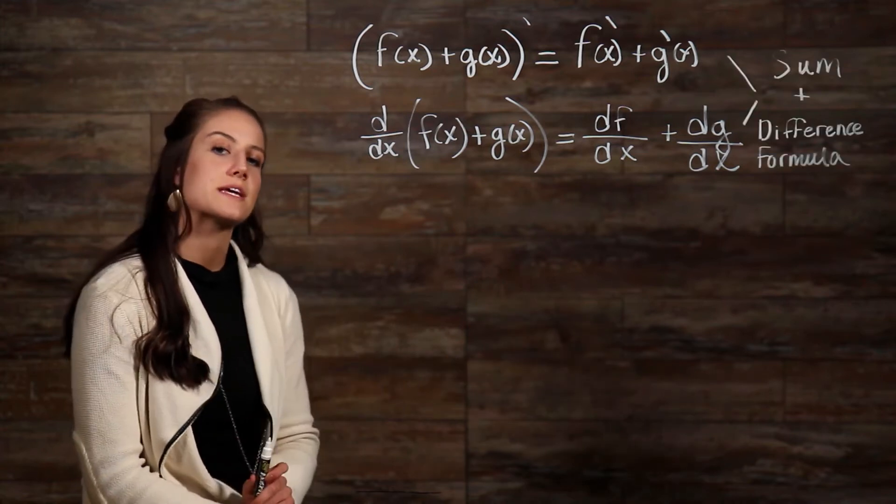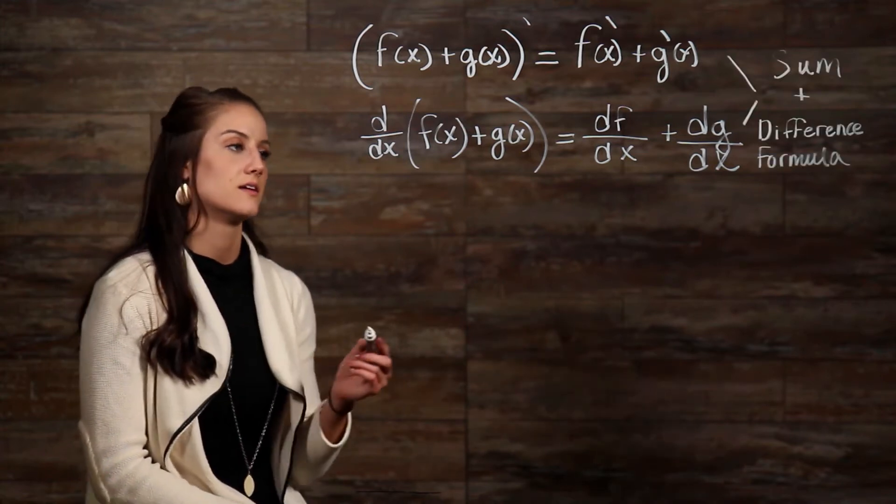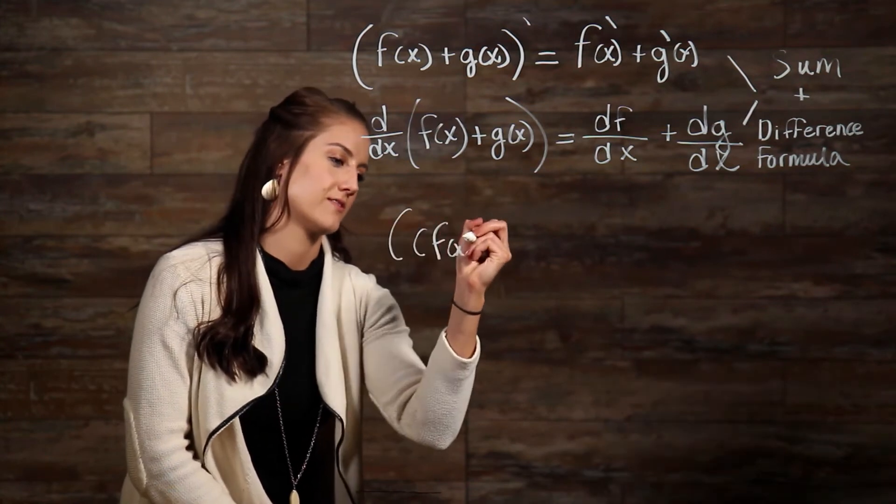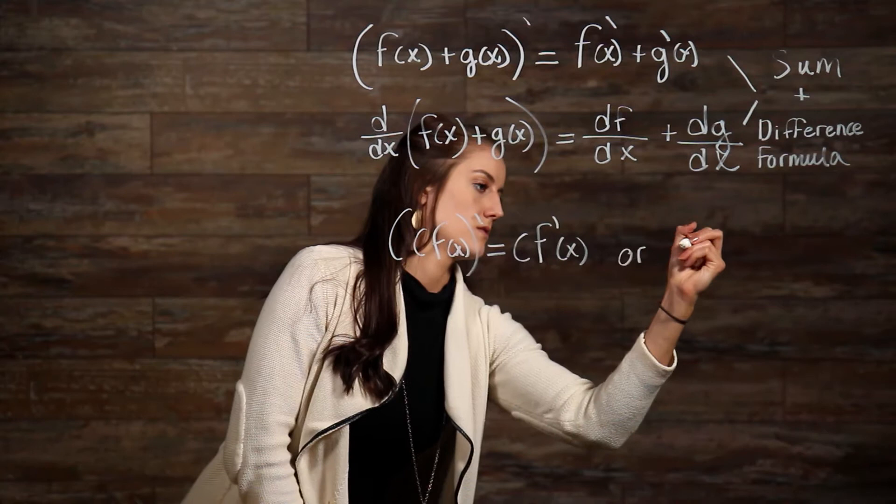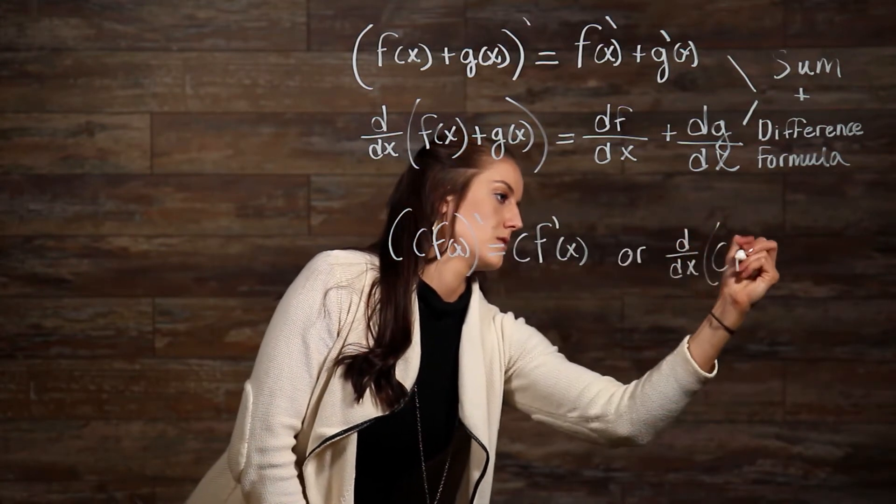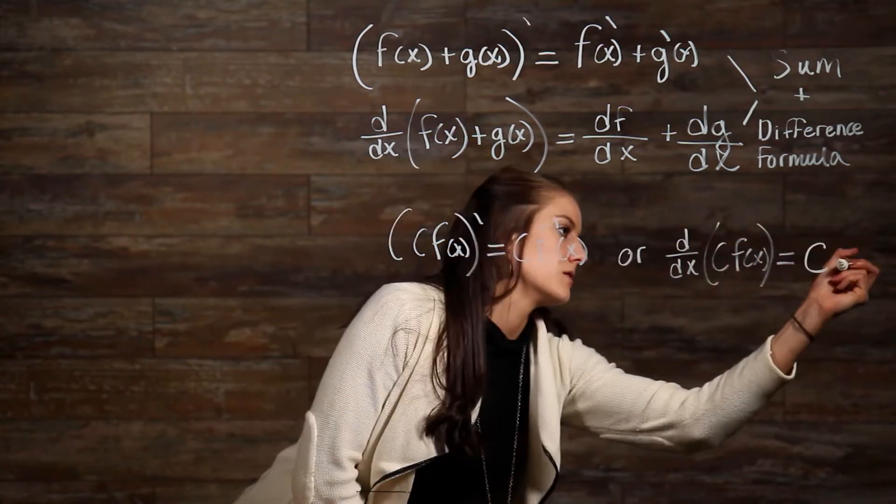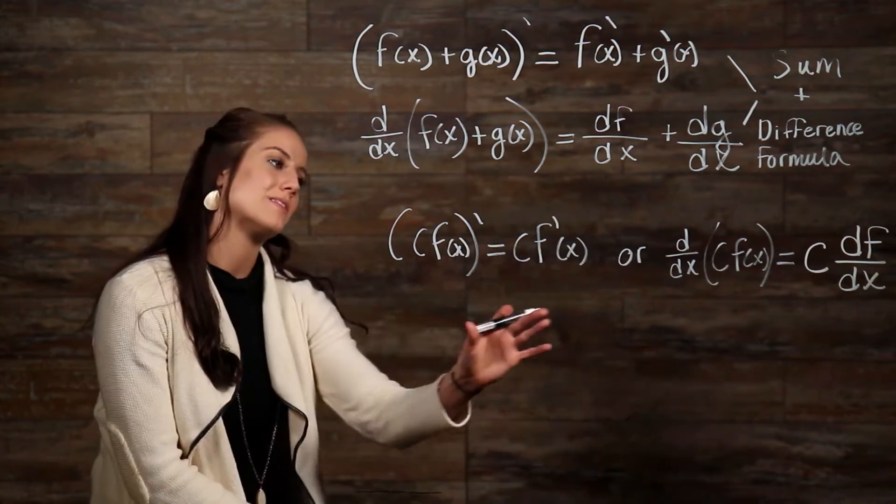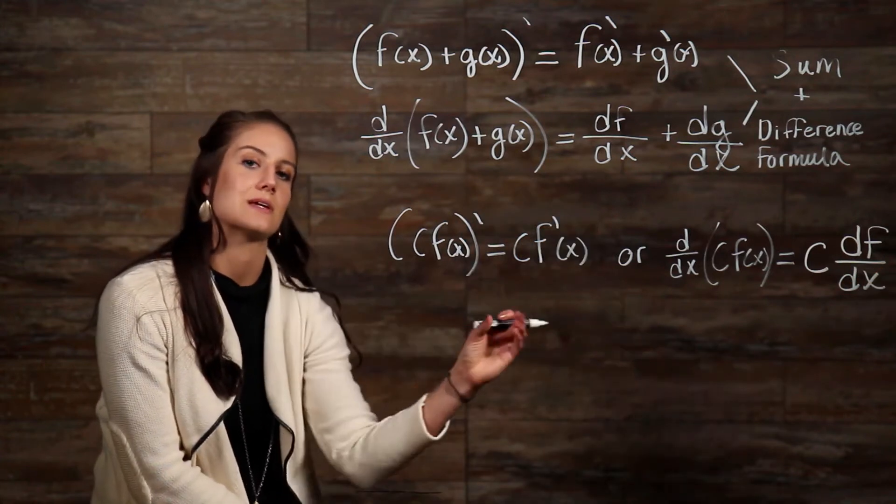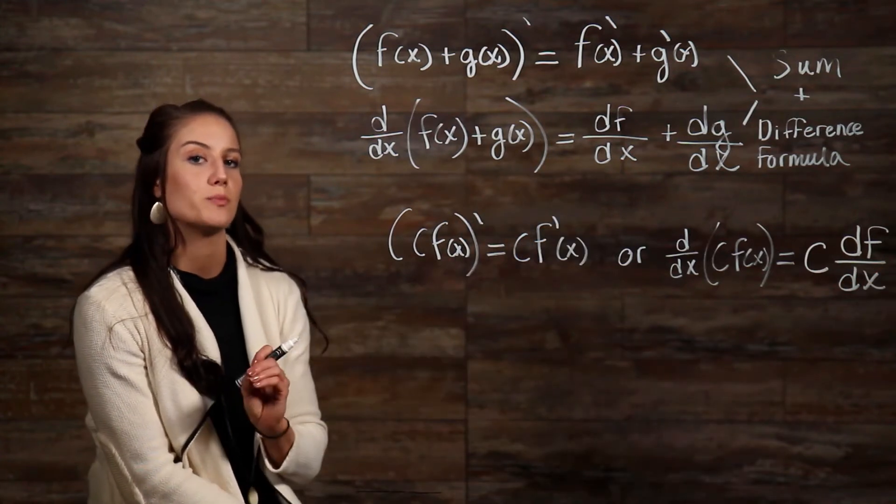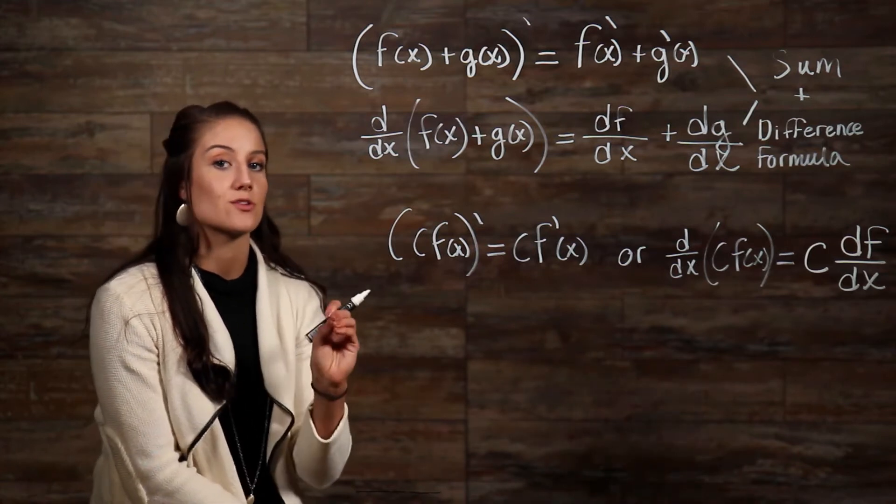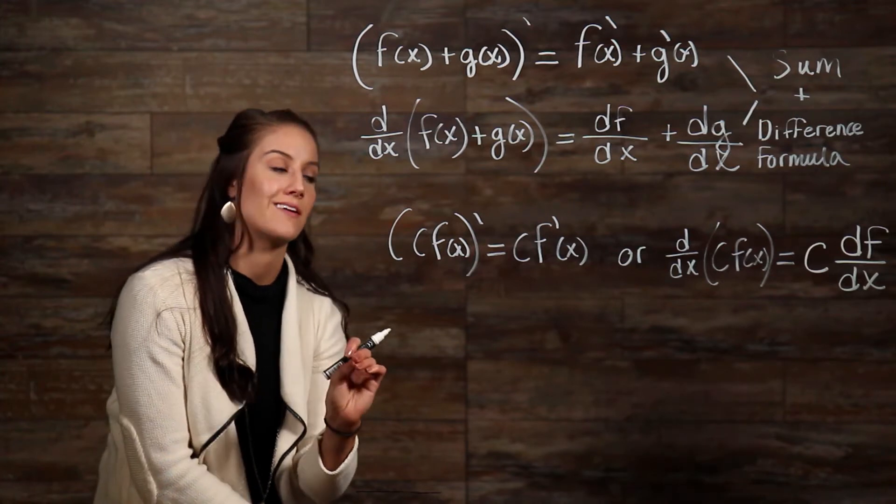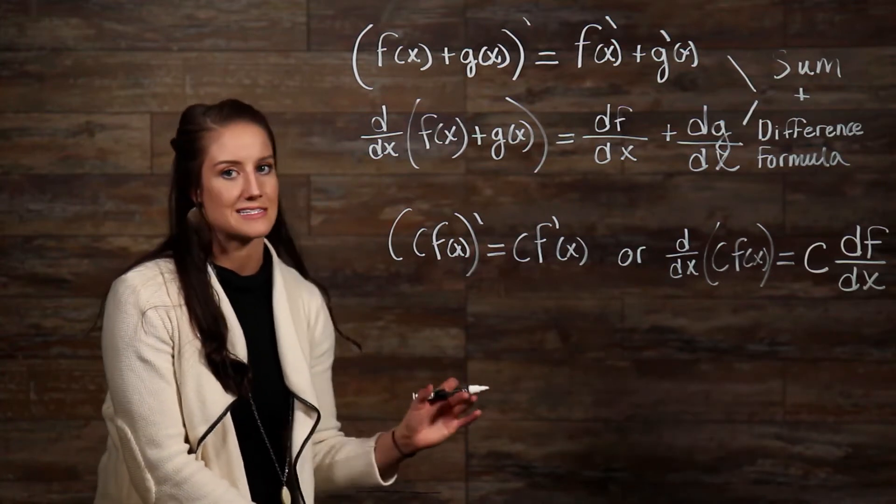The next property we'll take a look at deals with factoring out a constant. What this property is telling us is that we can take the constant that is being multiplied by everything in that function and factor it out, so that when we just take the derivative of the function, then we just move that constant back in front, so it stays the same.